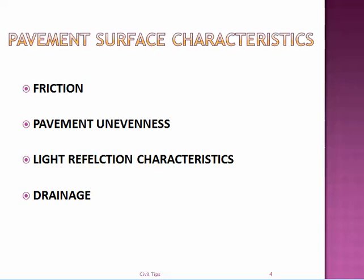The second surface characteristic is pavement unevenness. Imagine traveling on an undulated or wavy road surface — even a small up and down movement will cause very uncomfortable travel, even if traveling at a speed of 60 kilometers per hour. Therefore the road must be designed and maintained as even as possible.